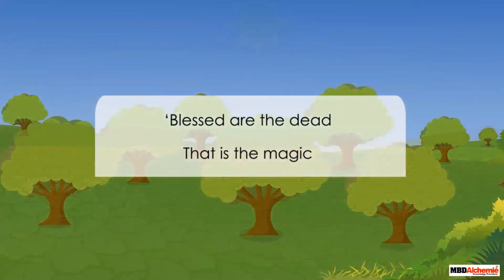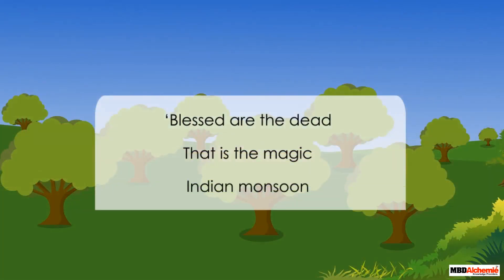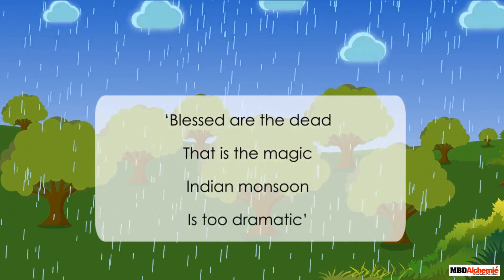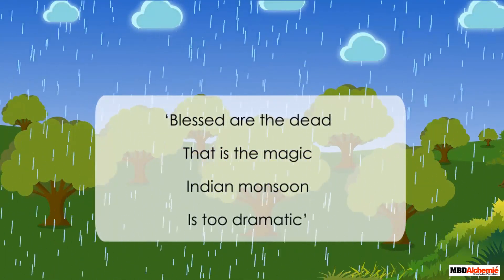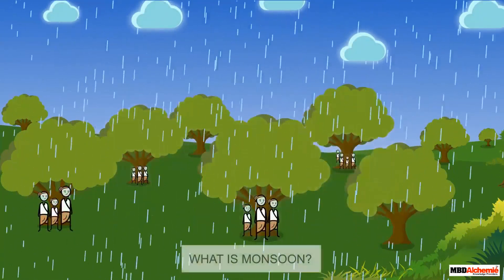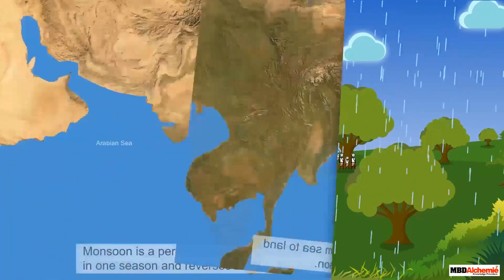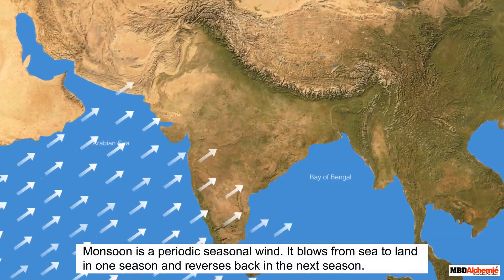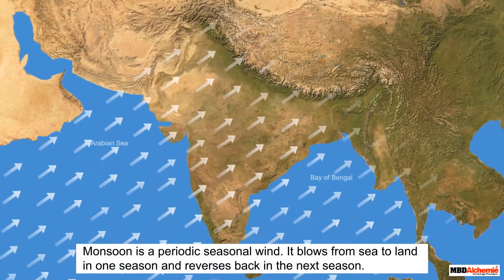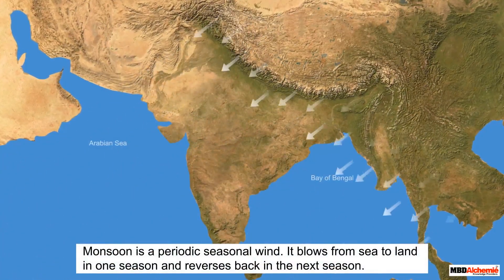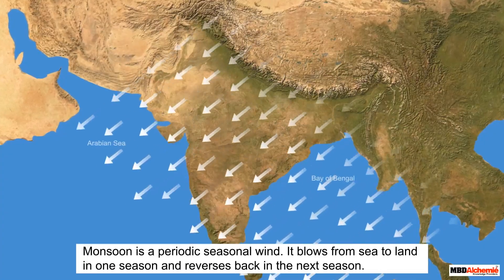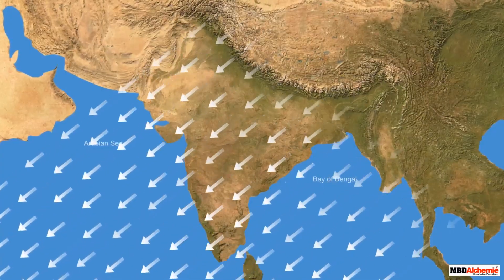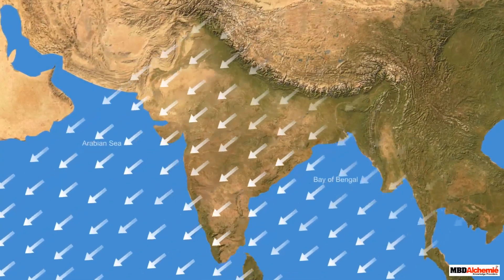To the poets, monsoon is magical and dramatic. Let us see what a monsoon is. Monsoon is a periodic seasonal wind that comes from sea to land in a particular season and completely reverses back with the change in atmospheric conditions in the next season. It is a typical yet dominant feature of the Indian climate.